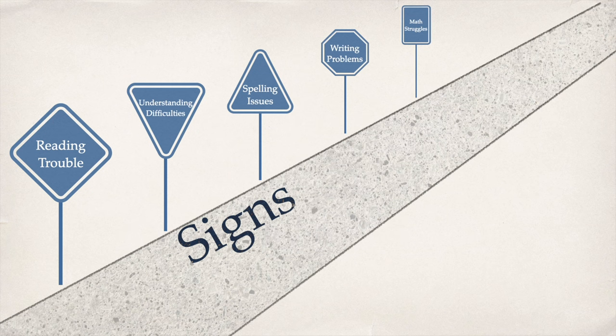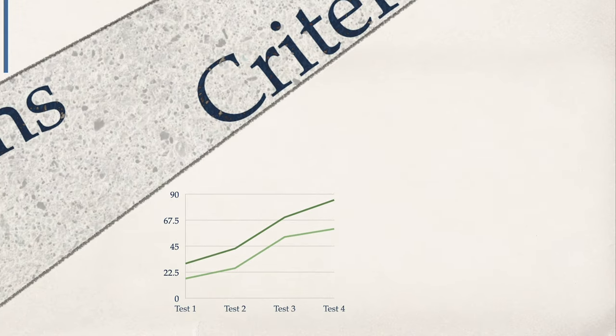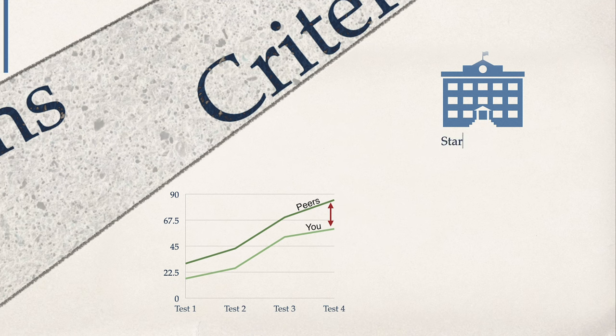Out of the signs just mentioned, you have to struggle in at least one area for more than six months. The criteria I'm now going to talk about are not optional — they all need to apply to you. The first is that there is a significant performance gap between what you are able to do and what your peers are able to do, so given your age, people would actually expect you to do a lot better. Generally, these difficulties start in early childhood at school, but people around you might not notice your struggles until the schoolwork gets harder, at which point you might lose your ability to cope.